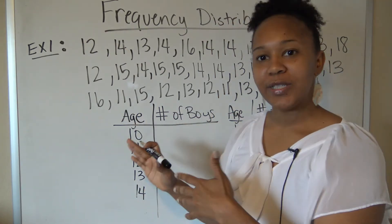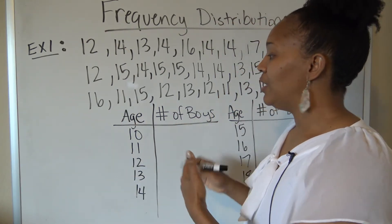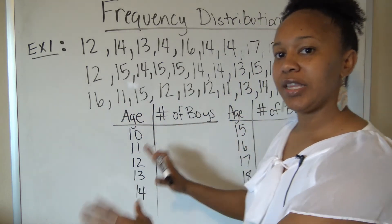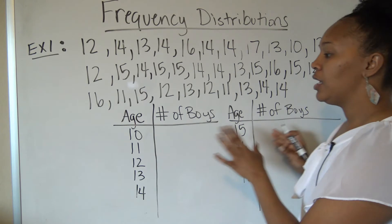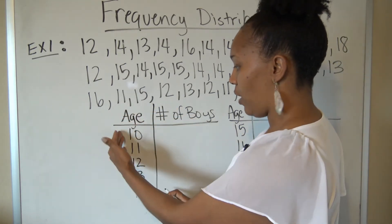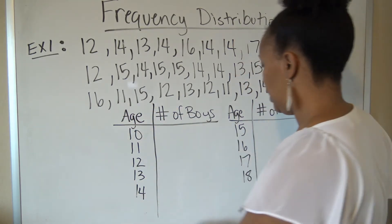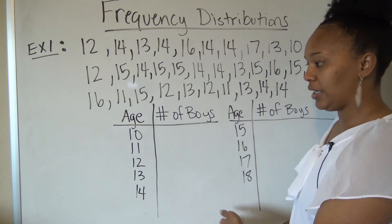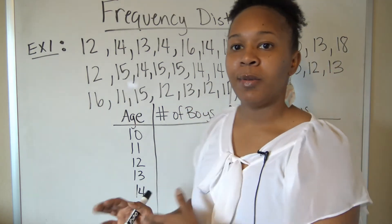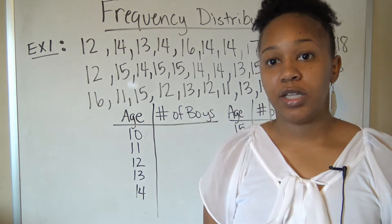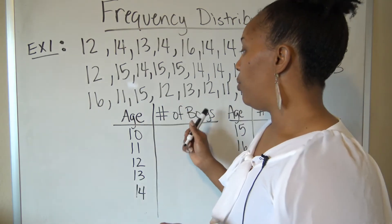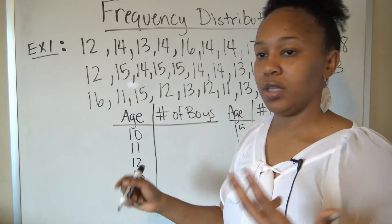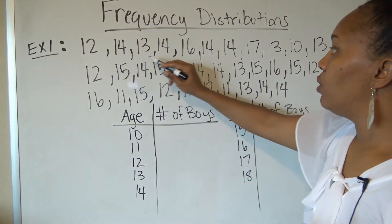I've gone ahead and started creating the frequency distribution table. Normally this would be one long table, but I've broken it into two sides due to board space. In one column I have the ages: 10, 11, 12, 13, 14, 15, 16, 17, 18. In the other column I'm going to put the frequency — the number of boys in each age category. Now I have to go through the list and sort the data.